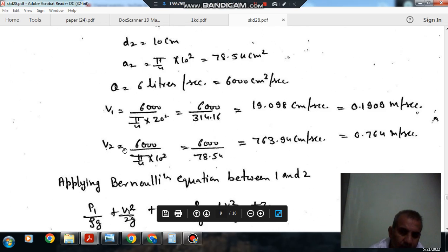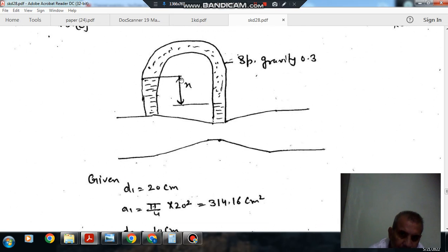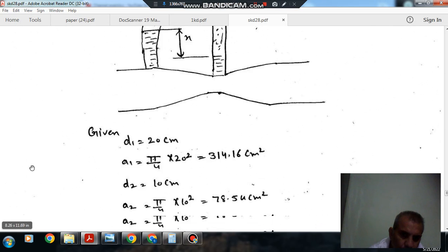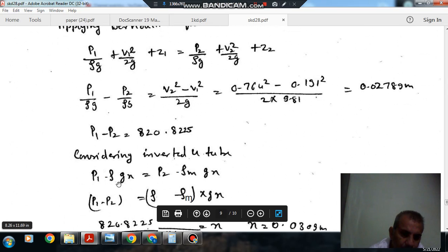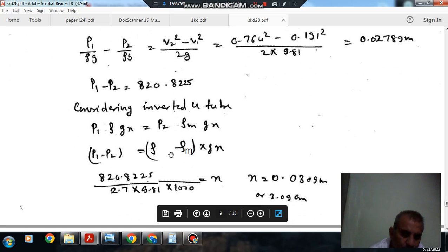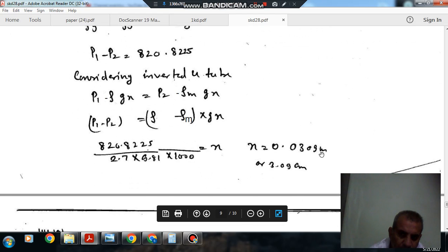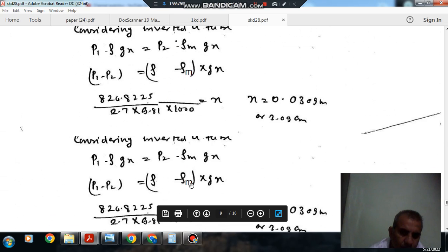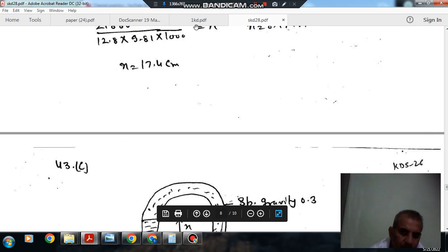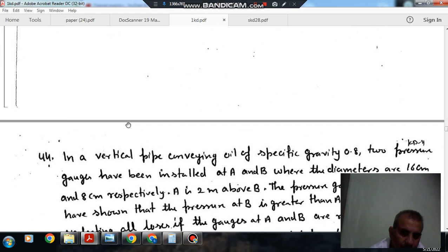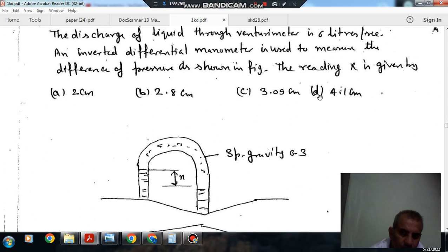Now considering that inverted tube, taking head at this level, it will be P1 minus rho gx equal to P2 minus rho m gx. So P1 minus P2 equals rho minus rho m times gx. P1 minus P2 is 218.825, so from this x comes out as 0.0309 meter or 3.09 centimeter. The answer is 3.09 centimeter, C is the right answer.